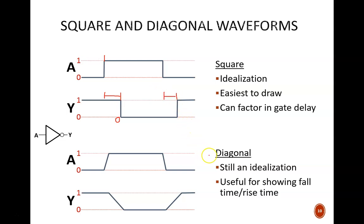Another type of waveform you might encounter is the diagonal waveform. This is still an idealization, but less so than a square waveform. Rather than instantaneous jumps or drops, this slope allows us to depict the rise time or fall time. Note how these two diagrams are aligned. The square jump in A occurs during the diagonal rise time. This makes sense, because A will read as logic 1 at some point before it reaches its maximum voltage. The connection between the Y waveforms is similar.